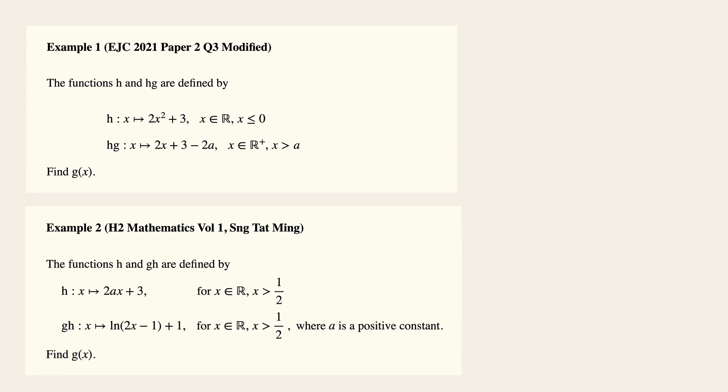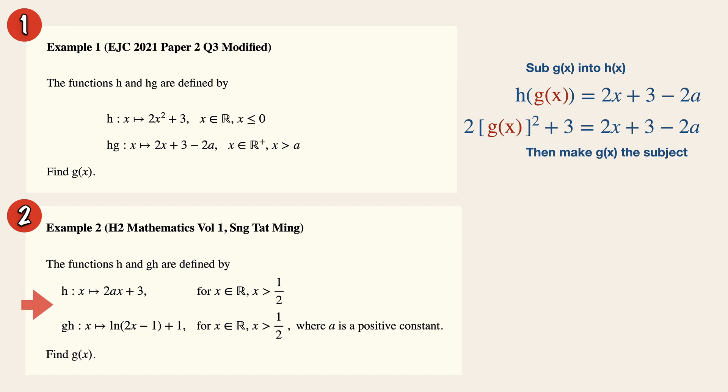Now in summary, there are two scenarios that you need to remember. If you are given a function h and hg, all we need to do is to take the function g, substitute it into the function h to give us a composite function hg, and equate that to the given equation. Now in the next scenario, if this doesn't work, if you have a function h and a gh, and you want to find the function g, all we need to do is to find the inverse of h, and substitute it into the composite function gh, in order to get the function g, which is based on the rule over here.